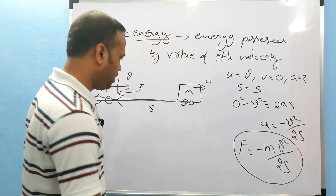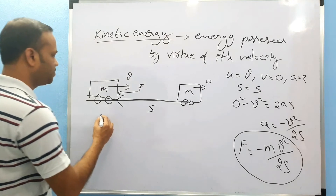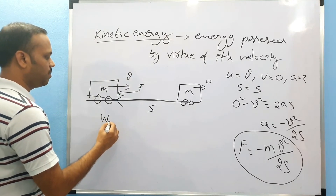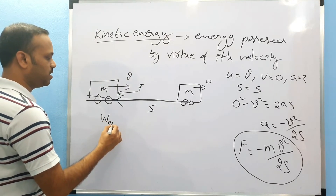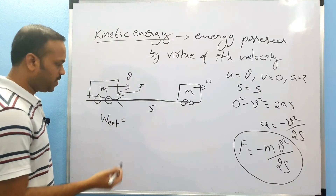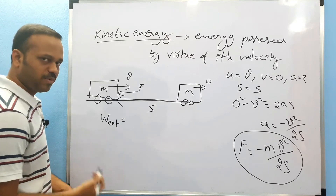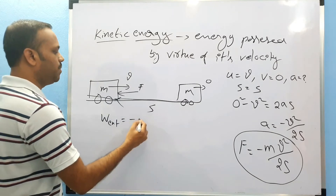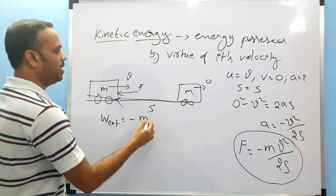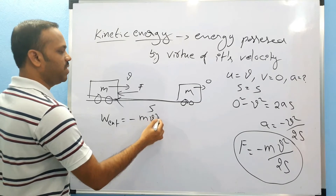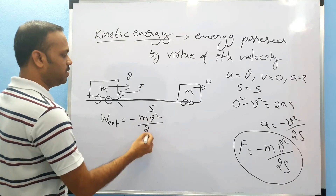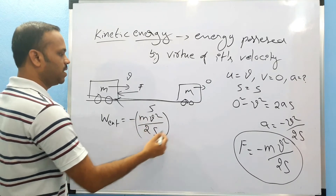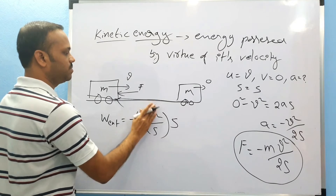So what is the work Superman has done? Work done by external force — work done by Superman — is force into displacement: minus MV squared over 2S, multiplied by S.